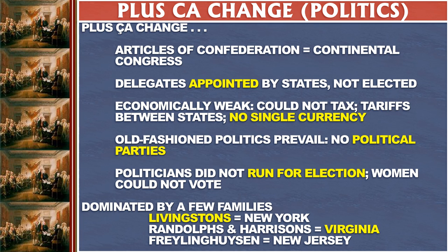Politicians didn't really run for election — they basically pretended to be surprised that people supported them, had their friends organize campaigns, but wouldn't give speeches. They often published editorials without their name attached. And there was a large segment of the population with no political rights: women could not vote. The Randolphs and Harrisons dominated Virginia politics; the Livingstons owned much of the land in upstate New York and controlled that state's politics; and the Frelinghuysen family had a lot of power in New Jersey.